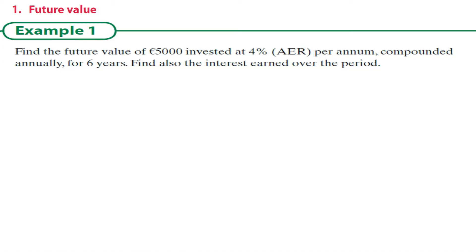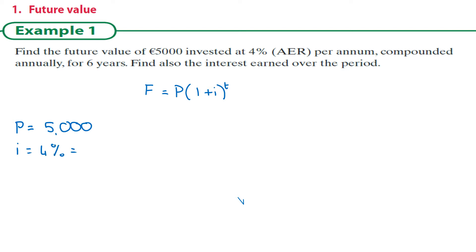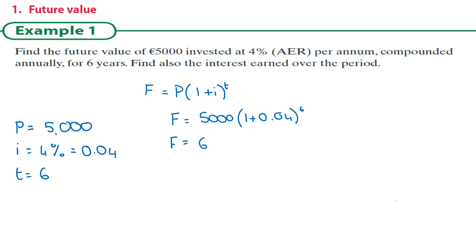Example one — future value. Find the future value of five thousand invested at four percent AER, compounded annually for six years. The future value equals the present value times one plus i to the power of t. The present value is five thousand, i is four percent which as a decimal is 0.04, and the time period is six years. So F equals five thousand times one plus 0.04 to the power of six. That can go straight into your calculator. Remember this is money, so two decimal places.